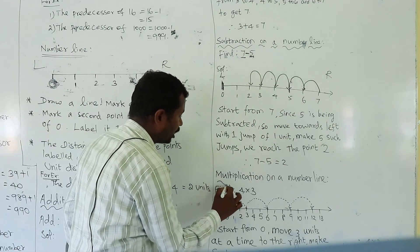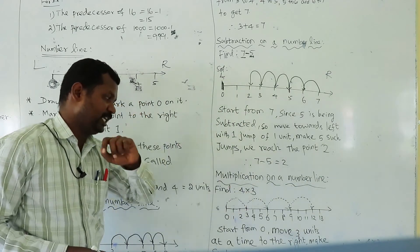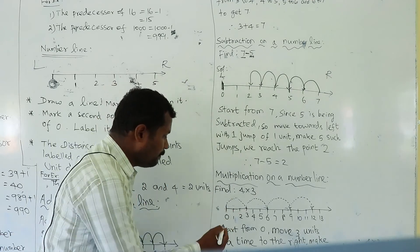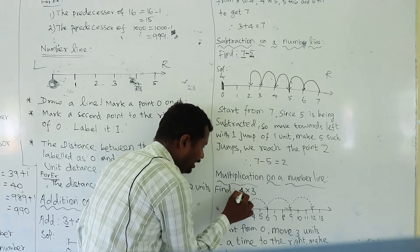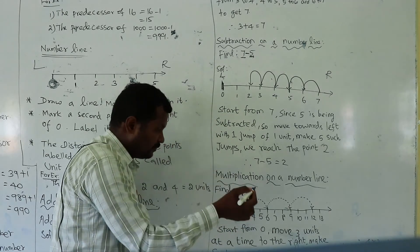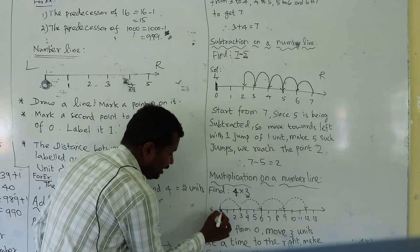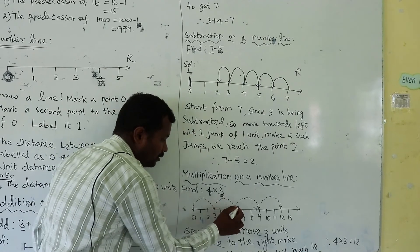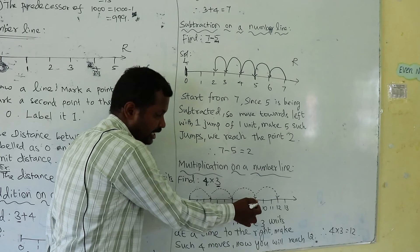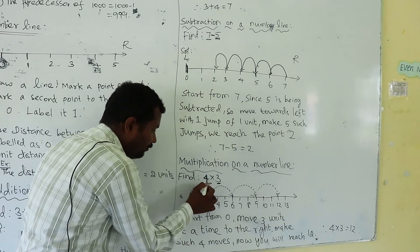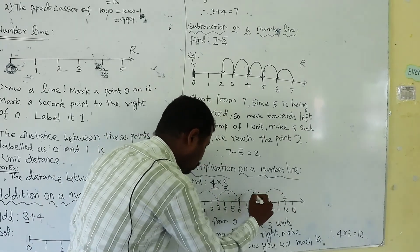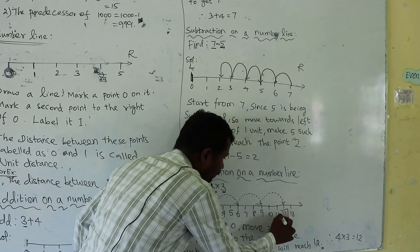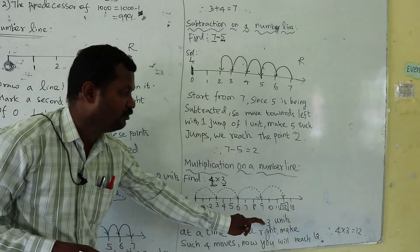Next, multiplication on a number line. Find 4 into 3. Draw a line and mark points 0, 1, 2, 3 on the number line. We start from 0 and move 3 jumps at a time. We make 4 moves of 3 jumps each: 1, 2, 3, 4. We reach 12. So, 4 into 3 is equal to 12.